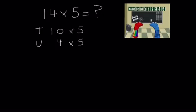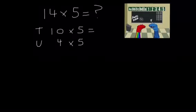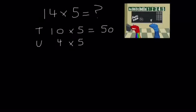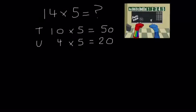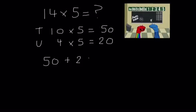So what is 10 times 5? 50. Good. And what is 4 times 5? 20. Fantastic! Then remember, when we partition a number we have to add the 2 answers back together. So what is 50 add 20? That's 70!